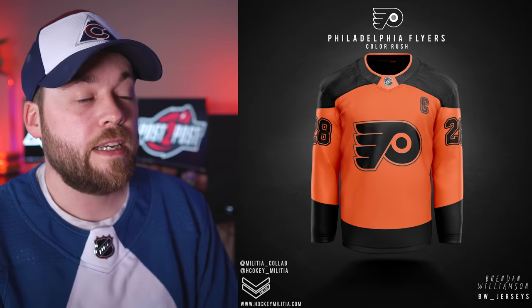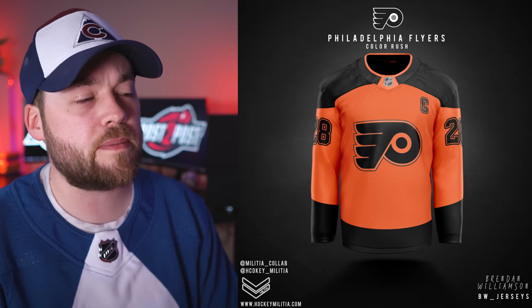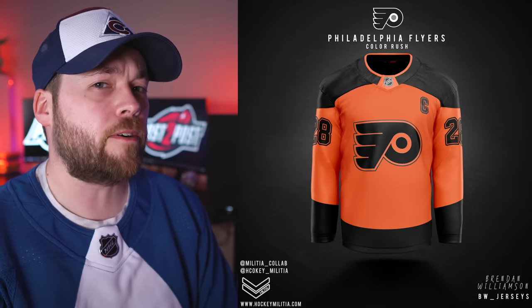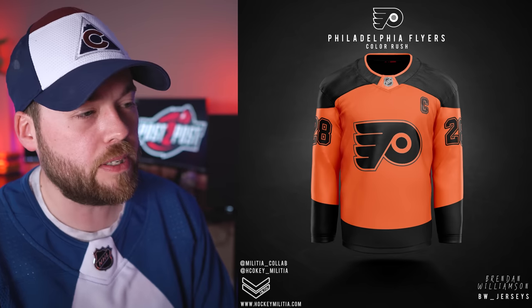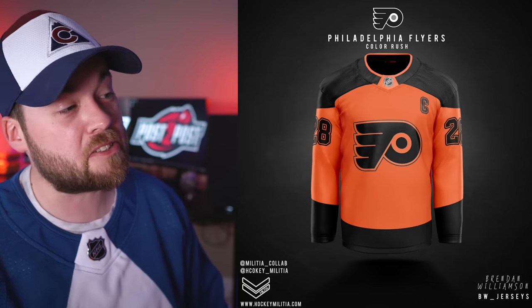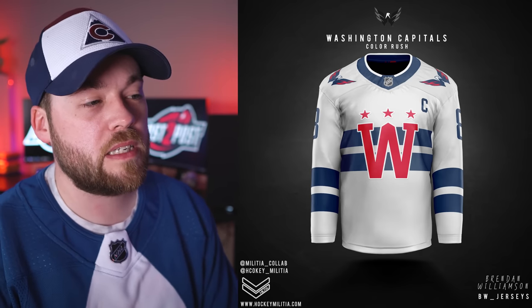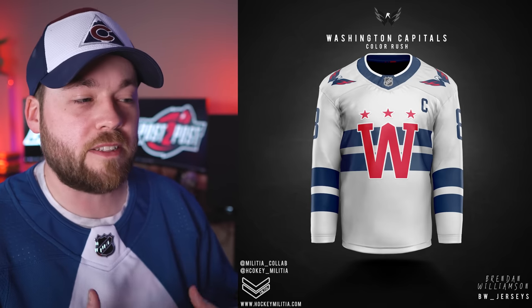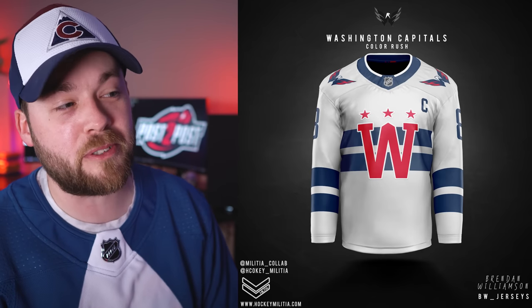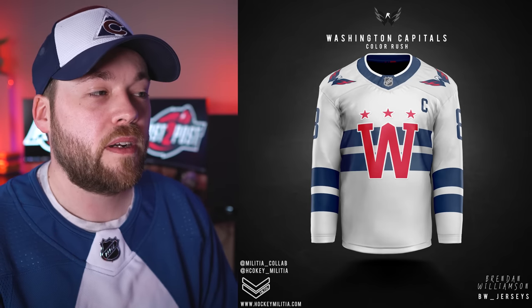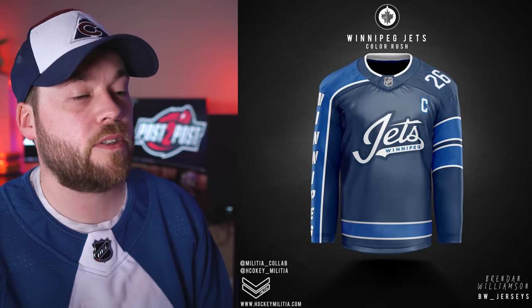Number 10, the Philadelphia Flyers. It's similar to their Stadium Series jersey against Pittsburgh, and I think it's better. I don't have any crazy wonderful things to say about it — I just think it's better than the jersey it reminds me of that already exists. Number nine, the Washington Capitals. I think a lot of people will disagree with me here. Most of the time when I see Washington concepts using the W, they look phenomenal and I really like them. I always get comments of people disagreeing, which is fine — but I really liked this one a lot.